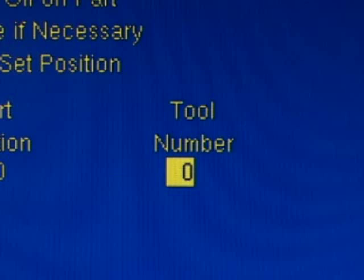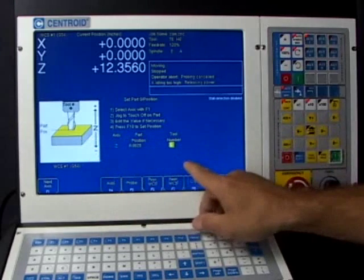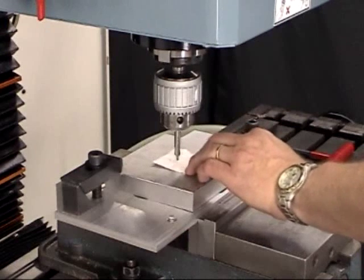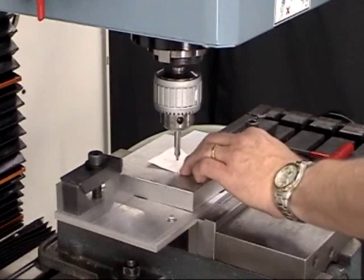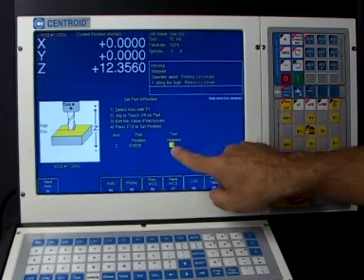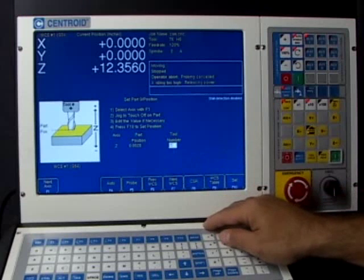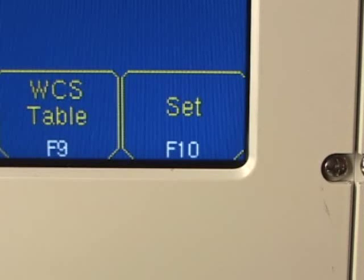And this is very important. Remember I said you can use any tool in the tool library to set your Z zero position. Well, you can use any tool that's in there just like I said, but when you're setting the position, you have to tell the control right now what tool number you're using. Well, we just happened to be using tool one because that was the first one in our program. So I'm typing in one and I hit set.